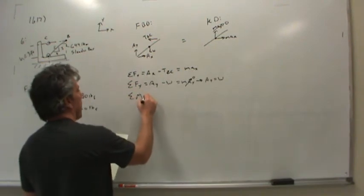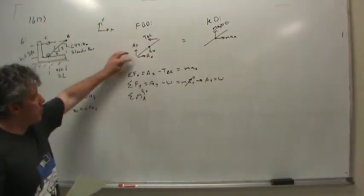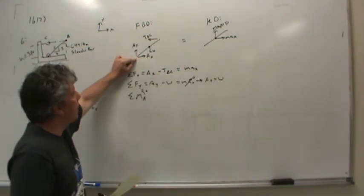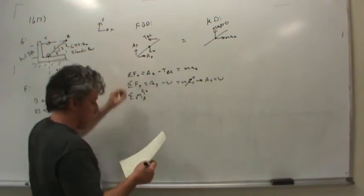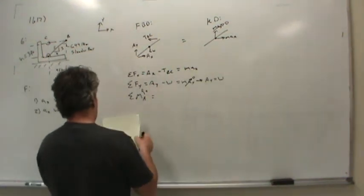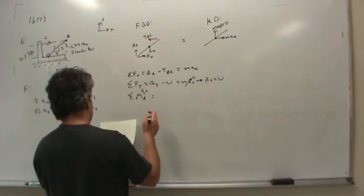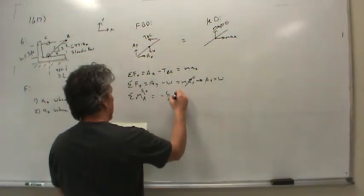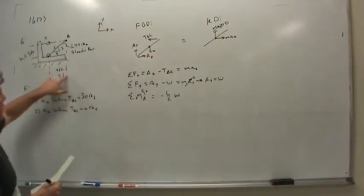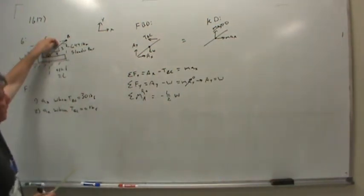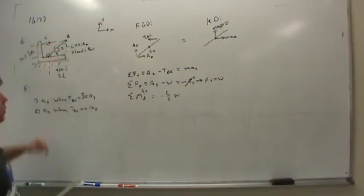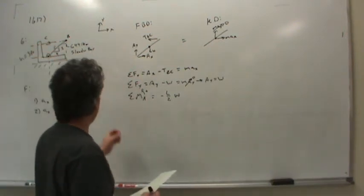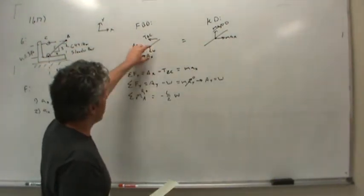And then let's sum moments about point A. The reason I'm summing moments about point A is because it gets rid of AX and AY. I really don't care about those two. I want to eliminate them. So let's do that. What would we have? Well, let's see. Negative L over 2 times W. Remember, L is my horizontal distance. The center of gravity of the bar is acting at the center of the bar. So that's just two feet over. It's two and a half feet up the incline, but it's just two feet over in the horizontal direction. That way, I don't have to deal with sines and cosines. I just want the horizontal moment anyway of the weight W.